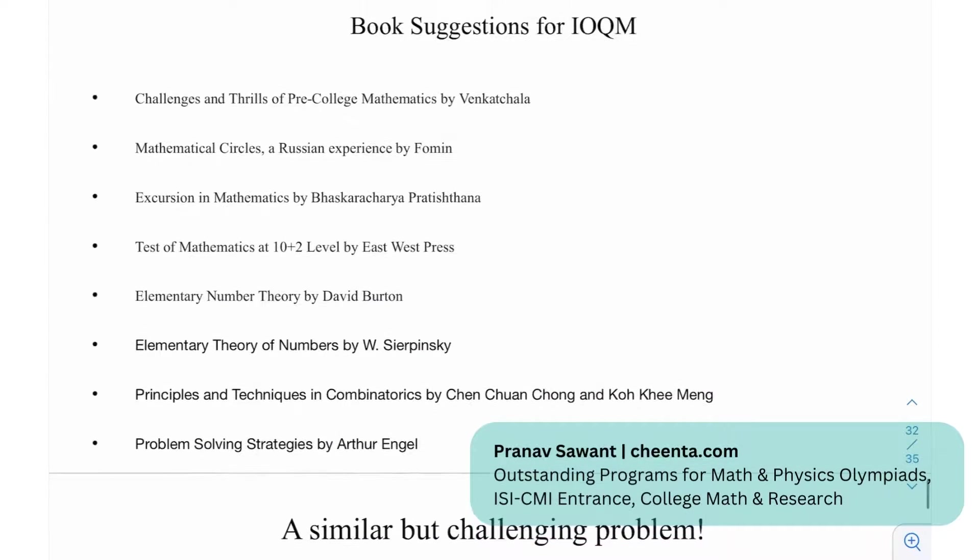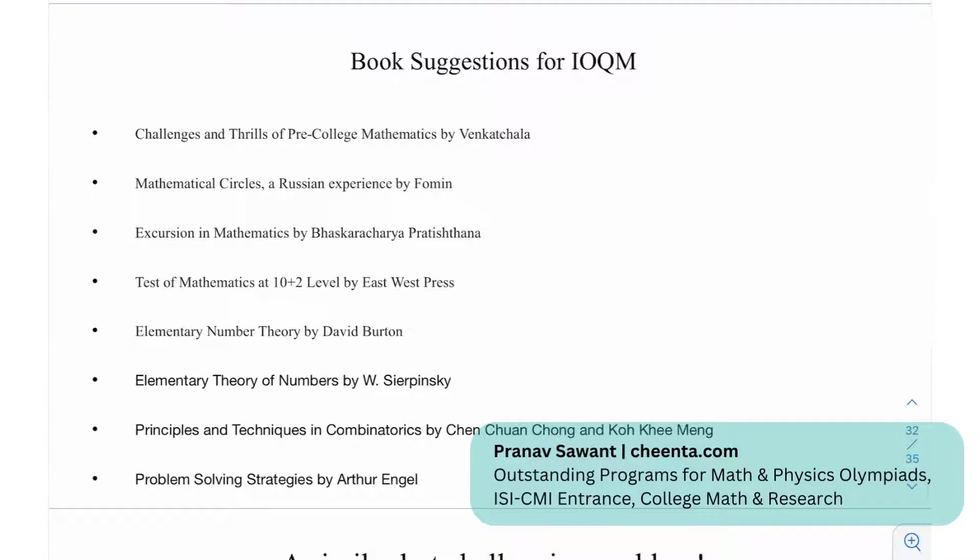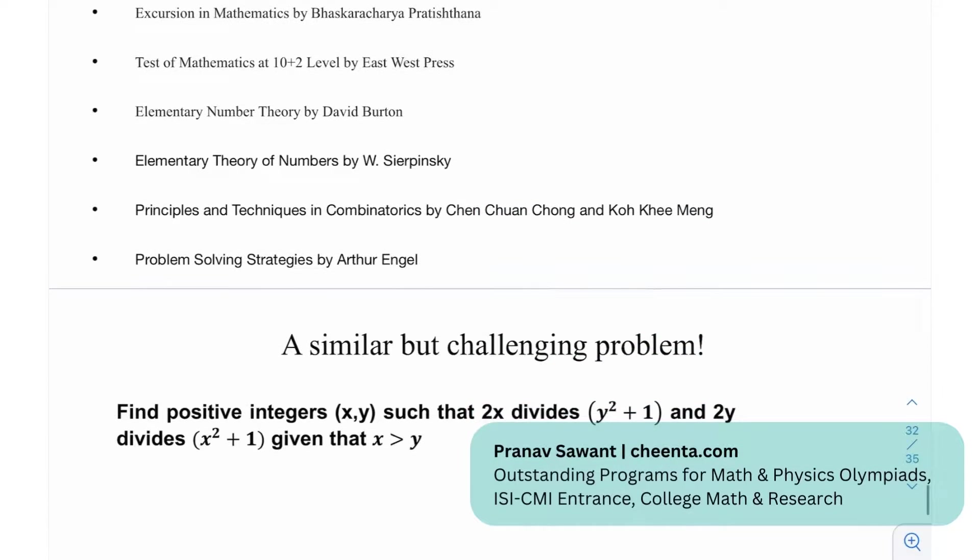Some book suggestions for the IOQM: Challenges and Thrills of Pre-College Mathematics, Mathematical Circles, Excursion Mathematics, Test of Mathematics at the 10+2 Level, Elementary Number Theory by David Burton, Elementary Theory of Numbers by Sierpinski, Principles and Techniques in Combinatorics, and Problem Solving Strategies by Arthur Engel.